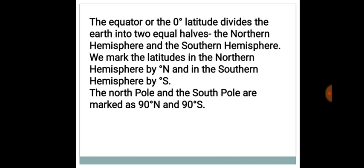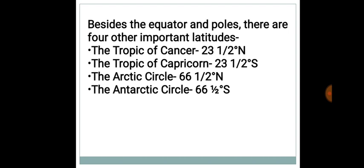We mark the latitudes in the Northern Hemisphere by degree N and in the Southern Hemisphere by degree S. Thus, the North Pole and the South Pole are marked as 90 degrees N and 90 degrees S. Besides the equator and poles, there are four other important latitudes.